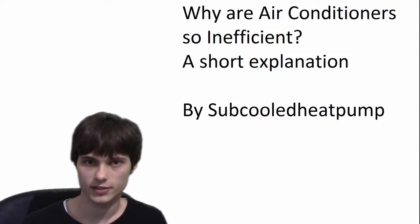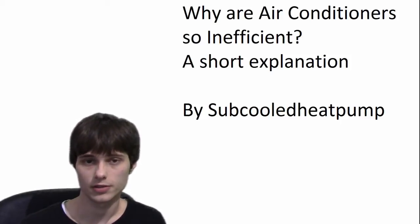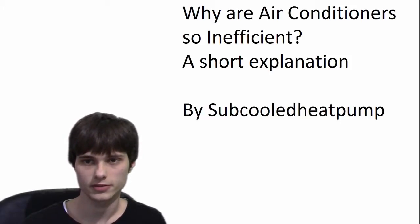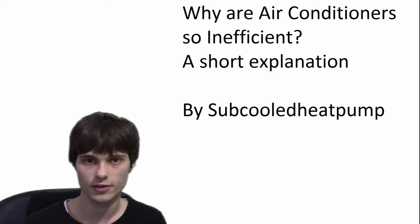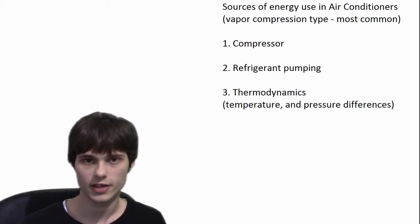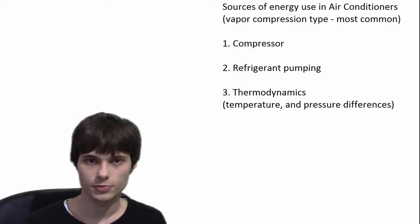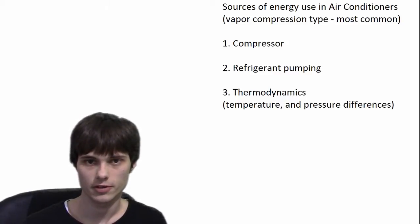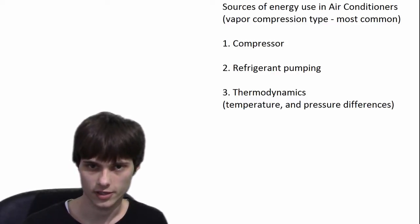I'll try to keep it brief and simple, if not maybe a little bit incorrect, but just for the sake of simplicity. I'm only going to talk about the most common types of air conditioners — that is a vapor compression cycle air conditioner. That's what most people have. I'm going to cover the three main areas of energy consumption in air conditioners: the first being the compressor and the mechanical aspect, the second is going to be the refrigerant, and the third is going to be the thermodynamic aspect. So let's jump right into it.